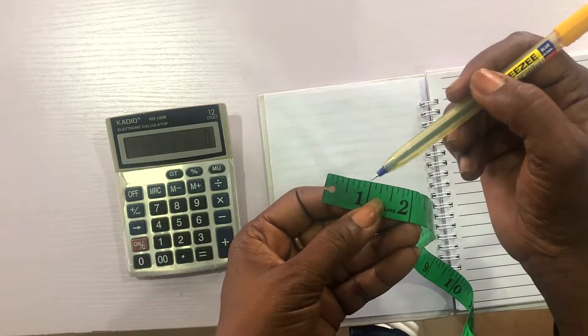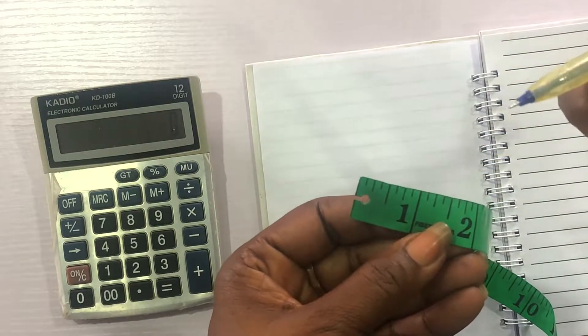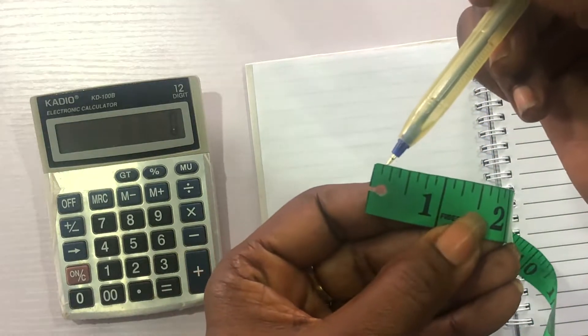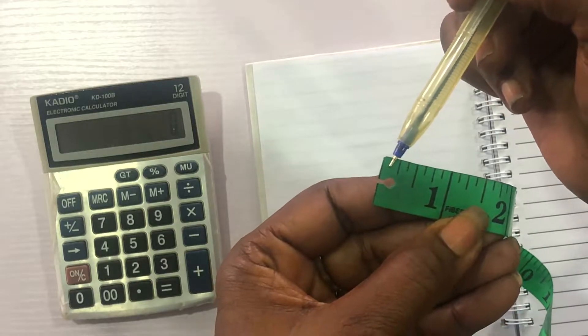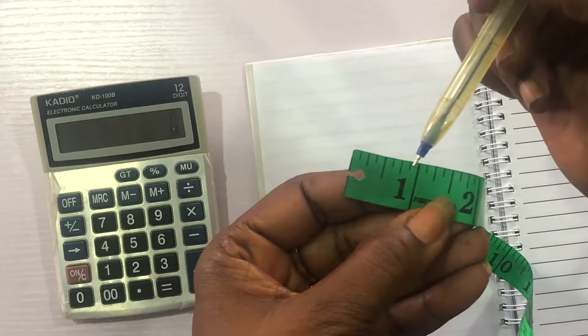So, if you go straight to this tape rule right now, this is one inch. This one inch we have is divided into eight. This is how we come about all this little line you see here. One, two, three, four, five, six, seven, eight.